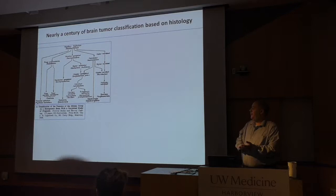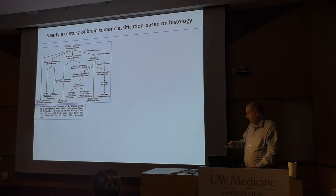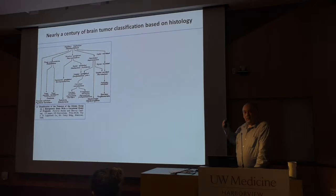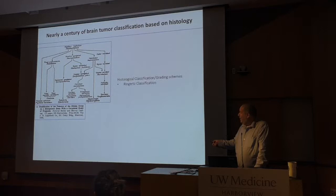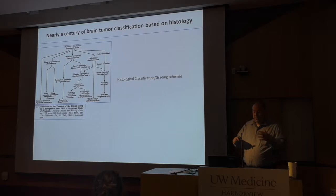The way we've defined and classified diffuse gliomas up until 2016 hadn't changed much over the past hundred years, really starting with Cushing and Bailey in the 1920s. This was the first organized attempt to look at histology under the microscope of different types of brain tumors and classify them based on the putative cell of origin — terms we still use today like glioblastoma, neuroblastoma, oligodendroglioma, ependymomas.